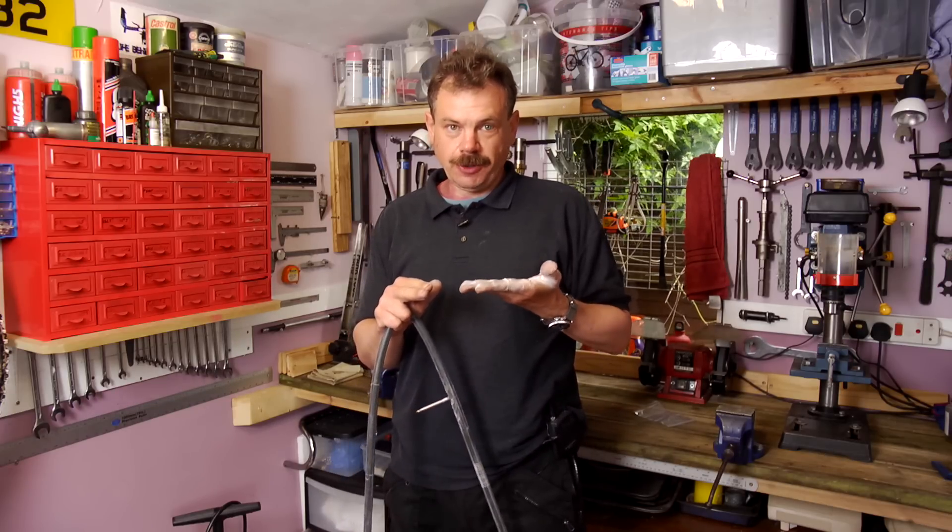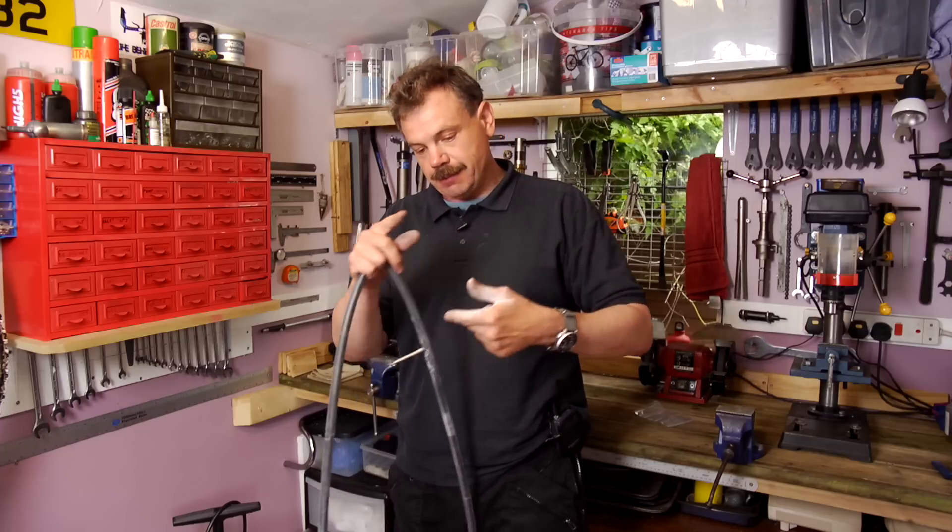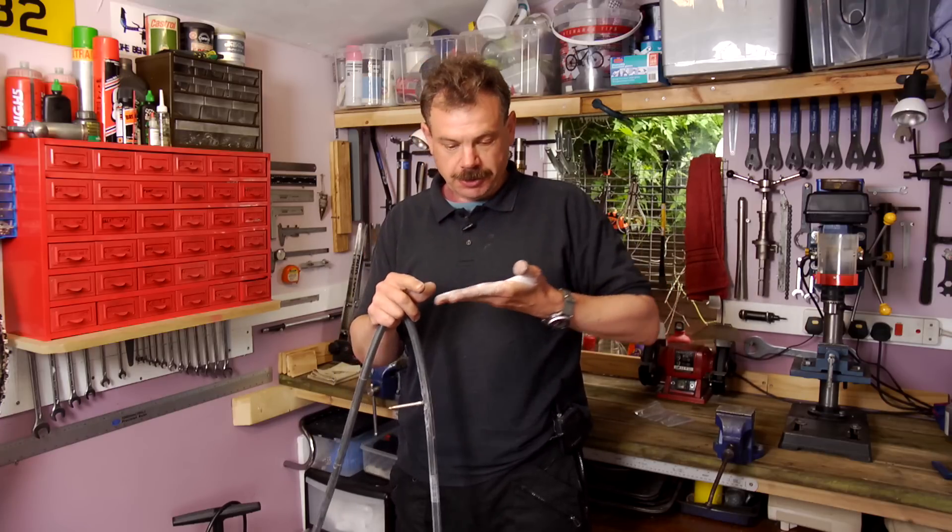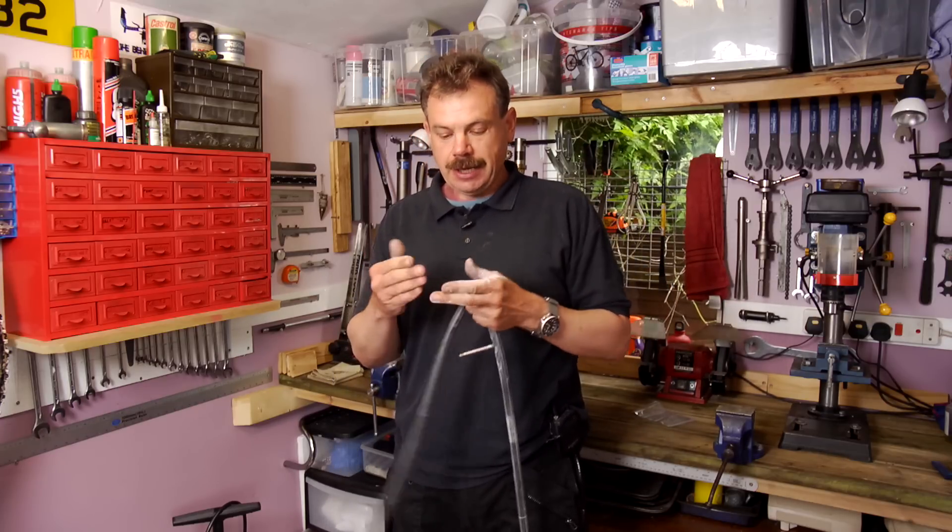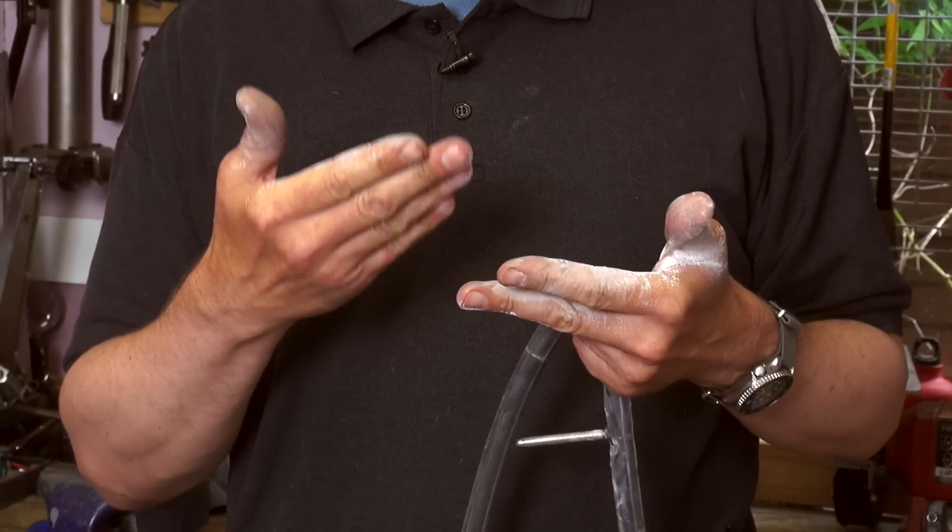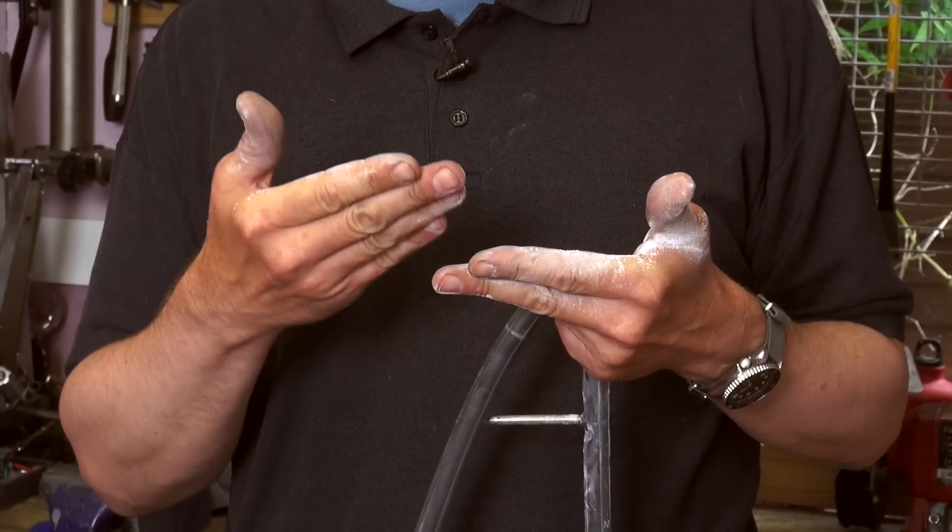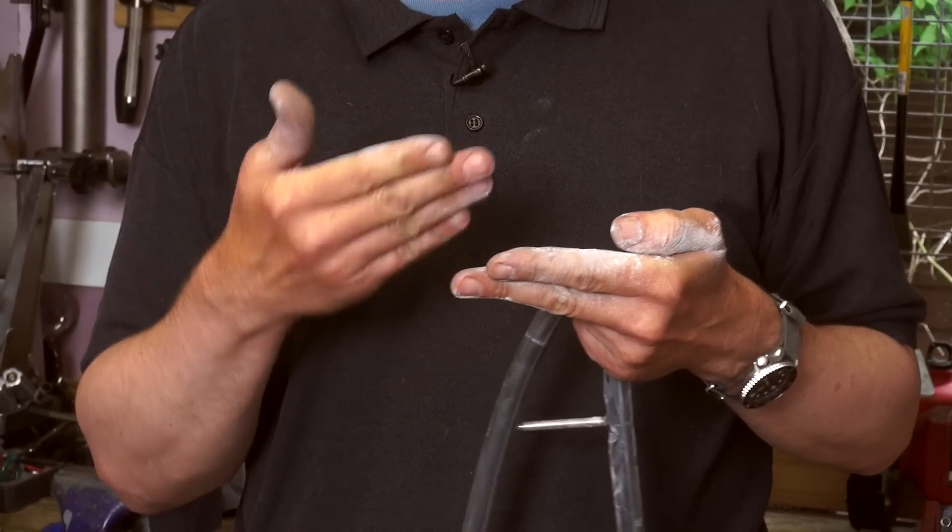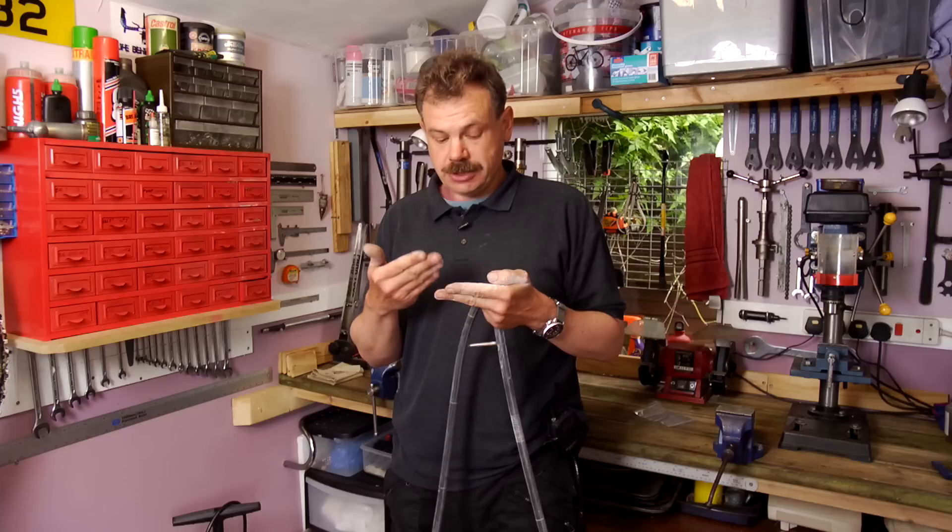So this is happening all the time. All the time you're riding, the bottom of the tyre is a flat spot and the carcass of the tyre is having to flex. So the thicker the carcass, the less flexible the carcass, the more energy is taken to deform it.